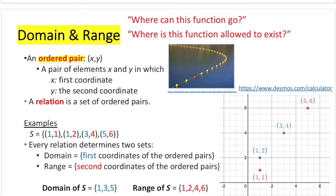We're familiar with ordered pairs already. In the first coordinate, it corresponds to the horizontal distance from zero. Y is the second coordinate and it represents the vertical distance from the origin. So that's ordered pairs. A relation is a set of ordered pairs — if you have multiple ordered pairs and put them together, altogether we call this a relation.